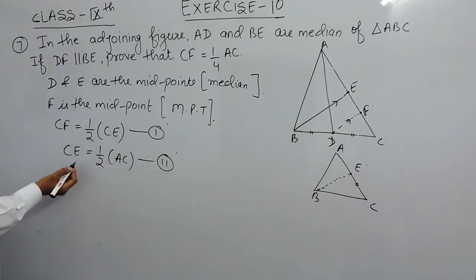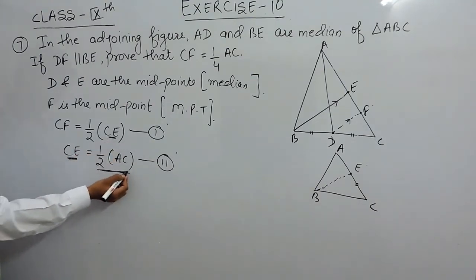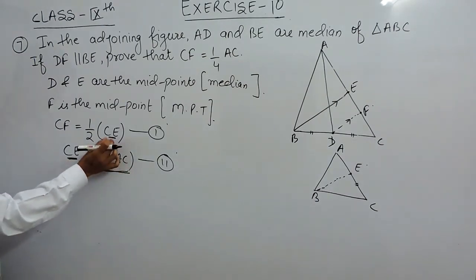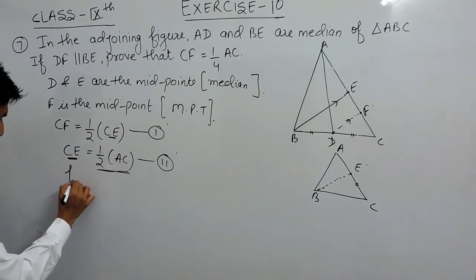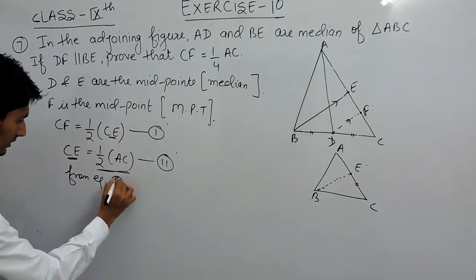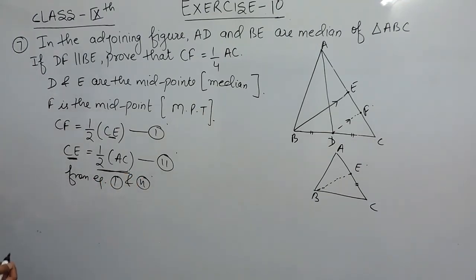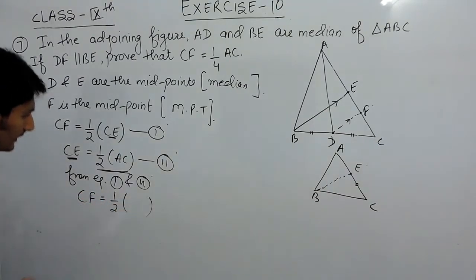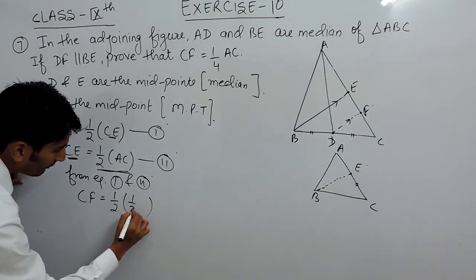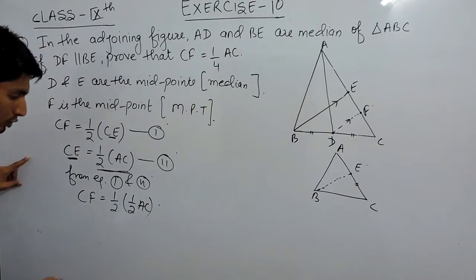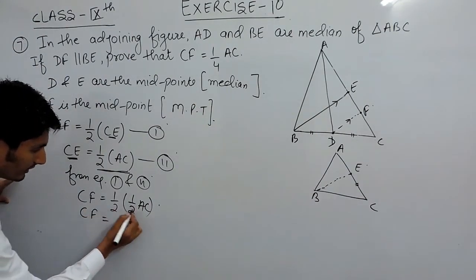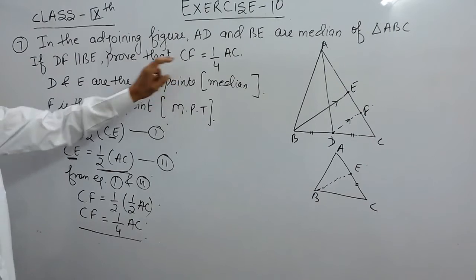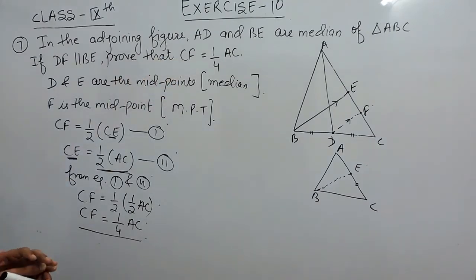So in place of CE here, we can write half of AC because these two are equal. So from equation first and second, if we substitute the value of CE in first equation, the equation will become CF equals half, and in place of CE, what I am writing is half of AC. So clearly, CF will be, when this is multiplied, one-fourth of AC. This is what we have to prove here. So CF equals one-fourth of AC.